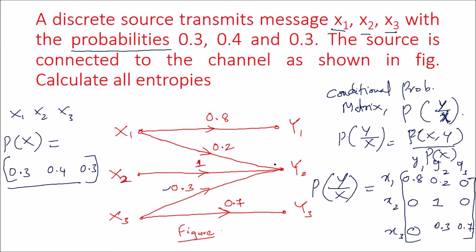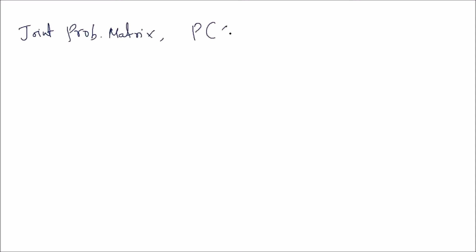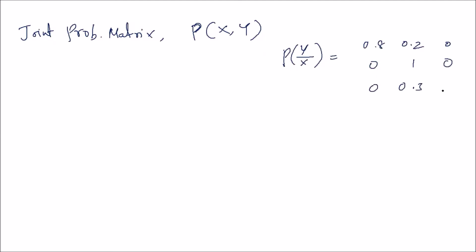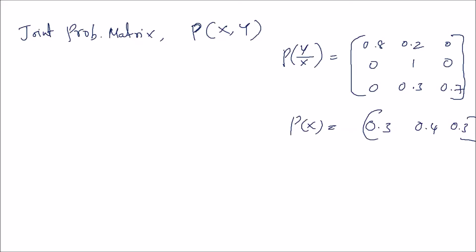Now we have to calculate the joint probability matrix P(XY). To calculate entropy we need different kinds of probabilities. The joint probability matrix P(XY) can be obtained by multiplying the rows of P(Y|X) by P(X). We have P(Y|X) as [0.8, 0.2, 0; 0, 1, 0; 0, 0.3, 0.7] and P(X) as [0.3, 0.4, 0.3]. The sum of probabilities should equal one.